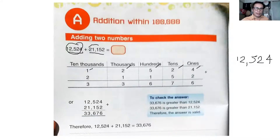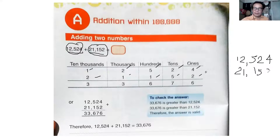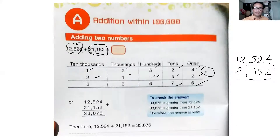The second number is 21,152, so: 2, 1, comma, 1, 5, 2. Then you add — this is the add symbol, plus. So: four plus two is six, two plus five is seven, five plus one is six, two plus one is three, one plus two is three.